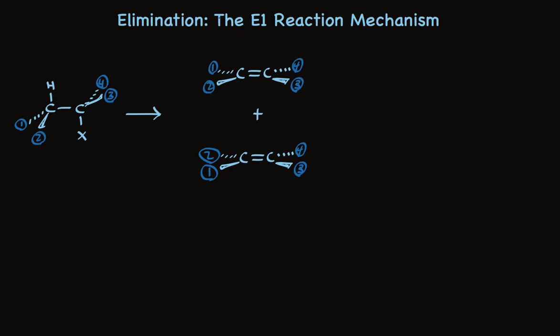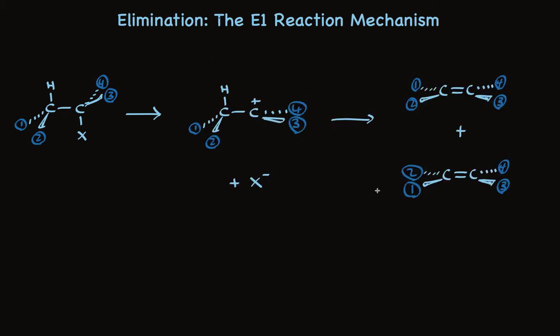The E1 reaction has two steps. The first is a unimolecular reaction where the leaving group leaves to make a carbocation. Because we're making a rather unstable carbocation, it takes quite a bit of energy. So this is the rate-determining step, the slow step.